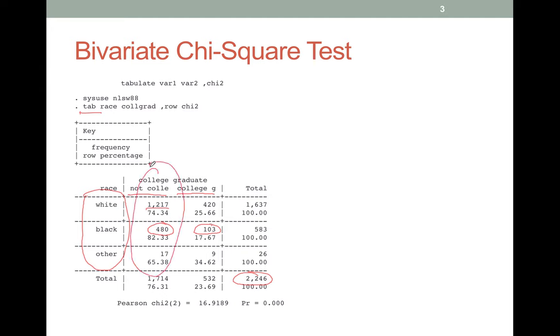We want to do a Pearson chi-square test of whether this distribution is the same as this distribution, or whether the populations are the same. In other words, that the probabilities of a person who is college educated being any one of white, black, or other is the same as the set of probabilities that someone who is not college educated is white, black, or other.